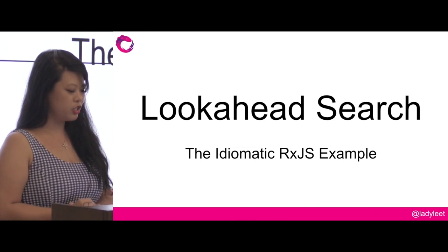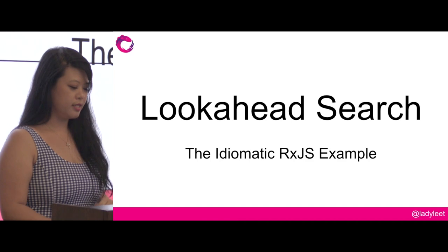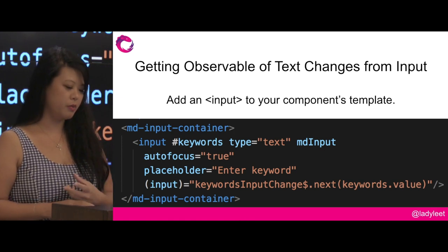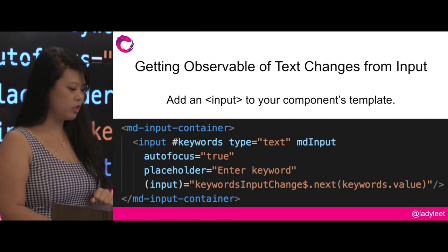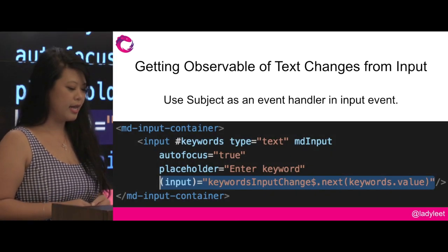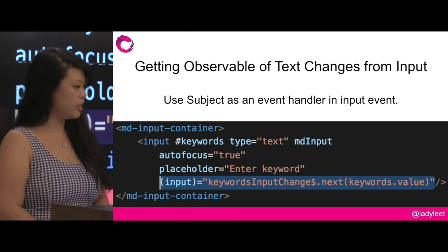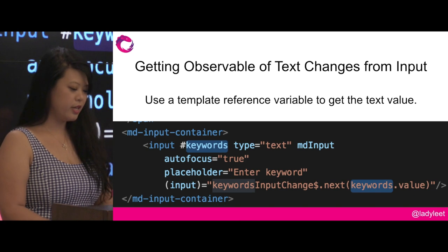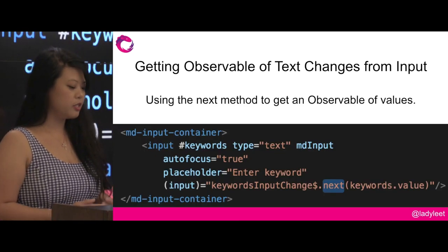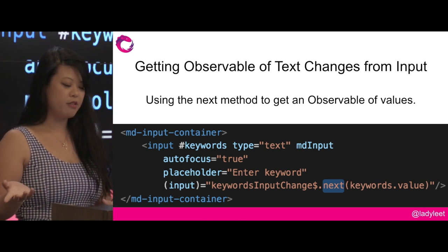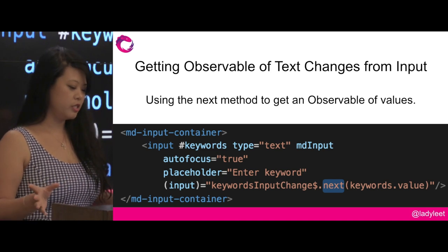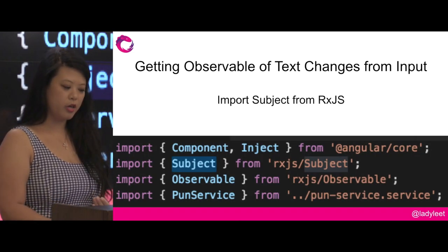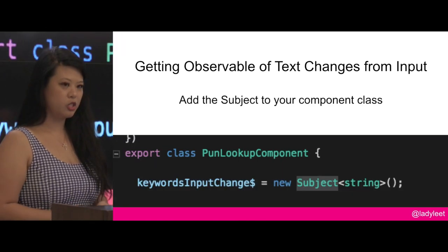The look-ahead search is sort of the idiomatic RxJS example. To create it, first we need to get an observable of text changes from the user's input. We add a simple input tag to our component's template and add an input event. Here we're using a Subject called keyword input changes as the event handler on the input event. Make sure to add a template reference variable to get the text value. Because Subject is both an observable and an observer, and observers have the next method on them, we can use next to push values through our Subject to get an observable of those values. This won't work unless you import Subject from RxJS and add it to your component class.